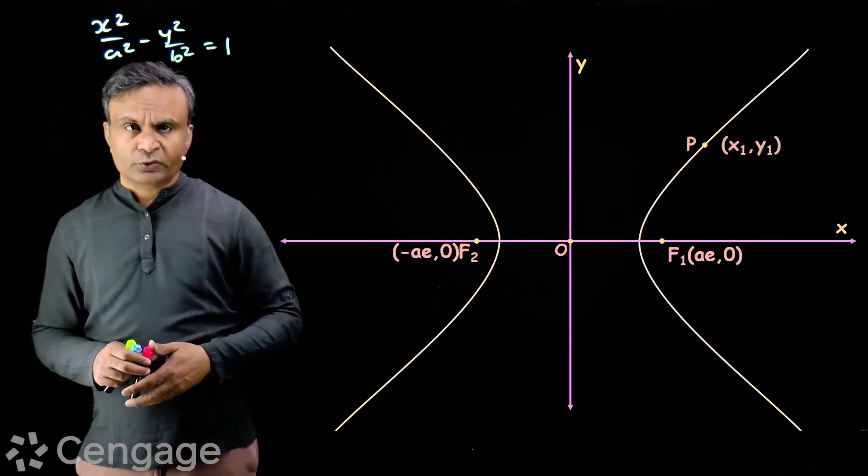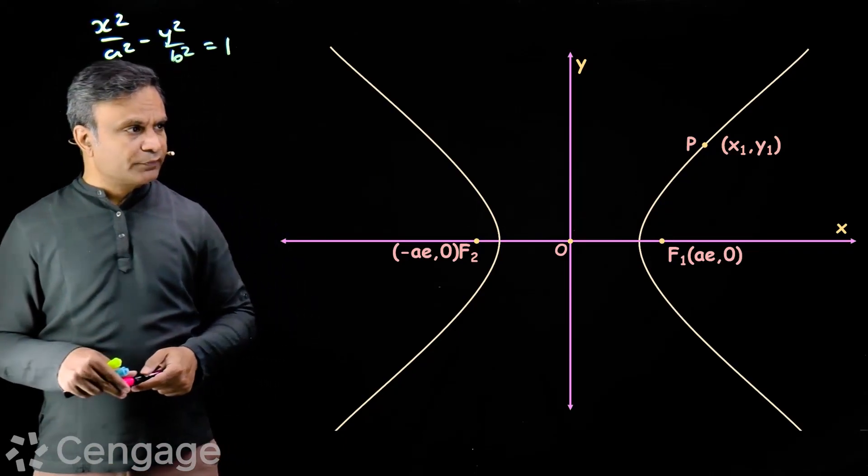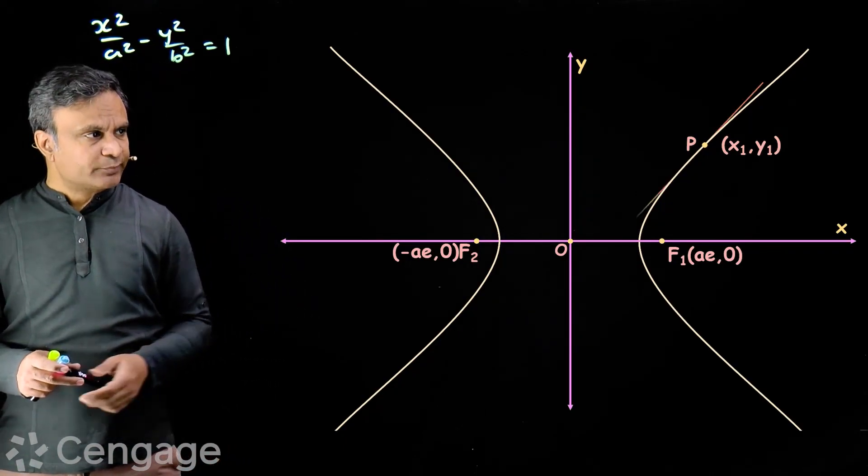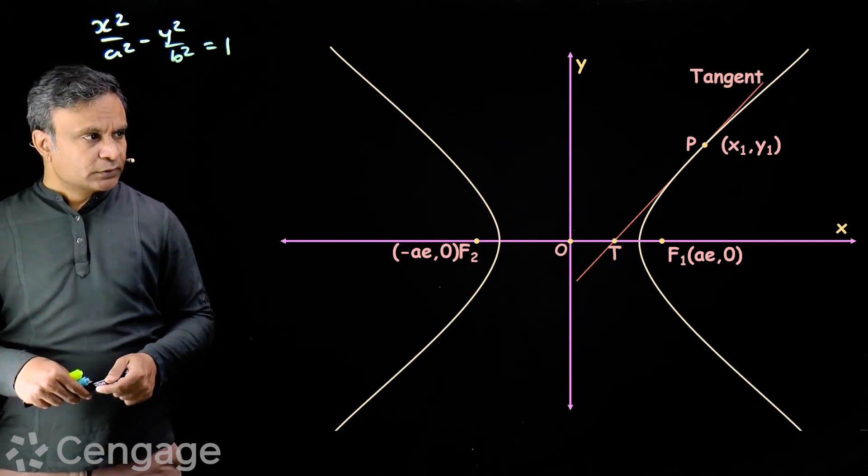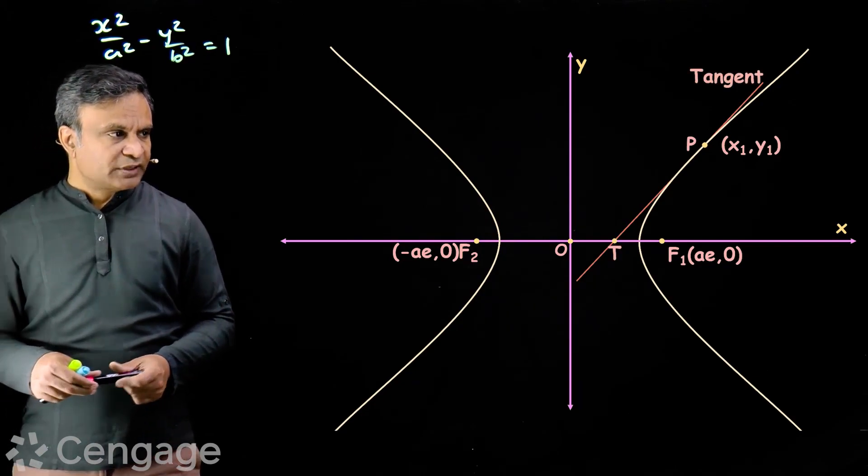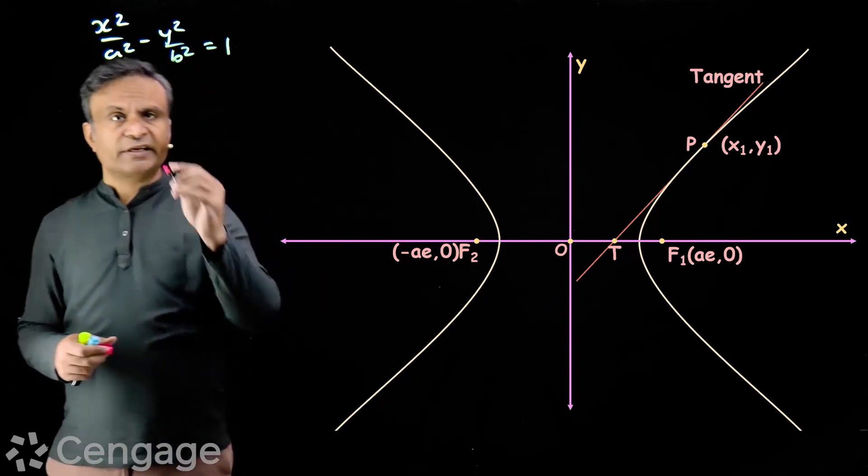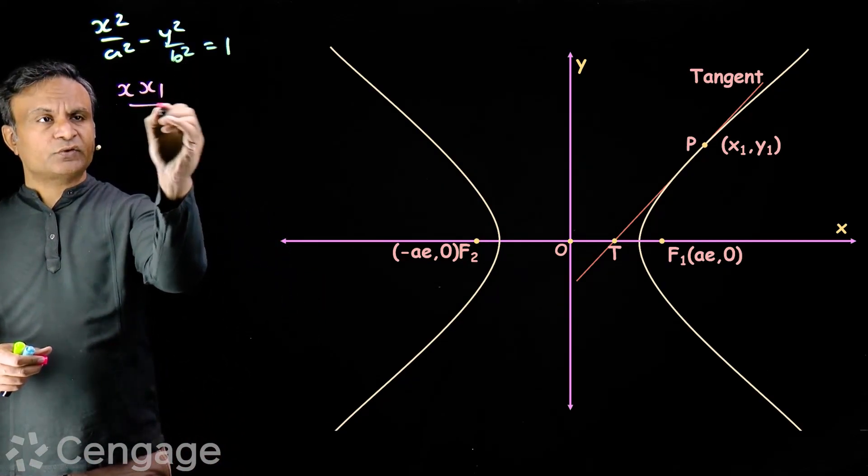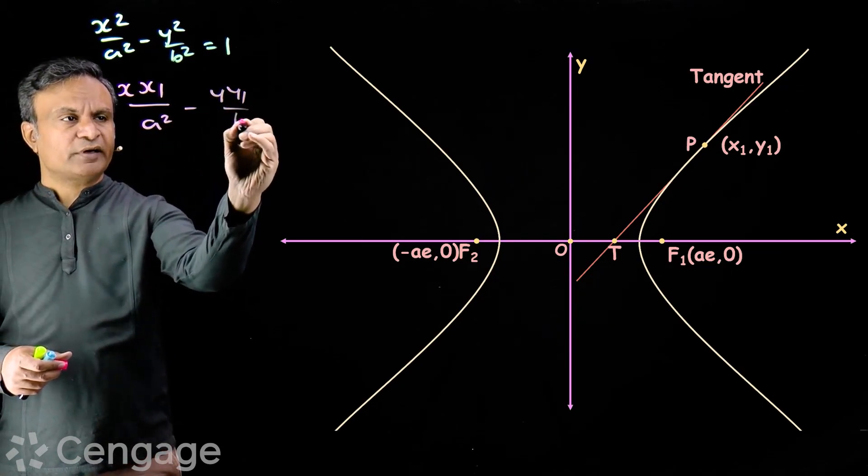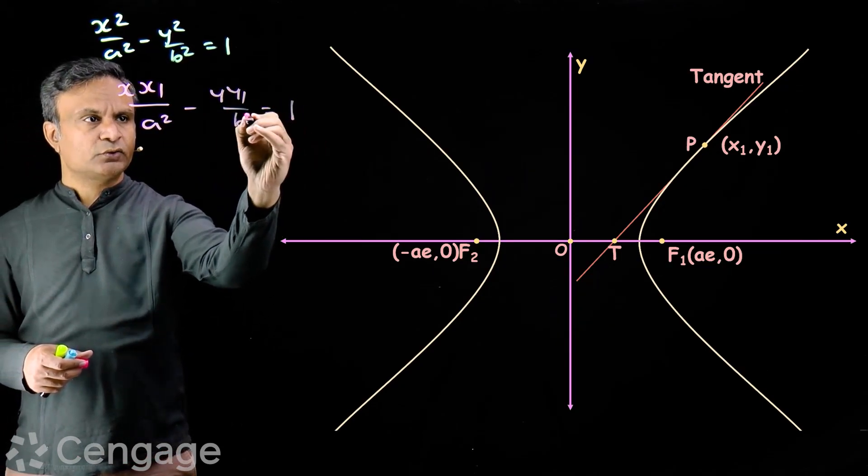We have point P on the hyperbola having coordinates x1 comma y1. We draw a tangent at point P which makes a transverse axis at point T. Equation of tangent will be xx1 over a square minus yy1 over b square is equal to 1.